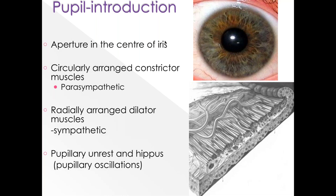Depending upon ambient light and the influence of sympathetic or parasympathetic nervous system, the pupil is forever changing. There is one condition called pupillary unrest or hippus, in which the pupil constantly changes even without any change in illumination or nervous system influence. The exact cause is unknown but it is considered a normal physiological condition. Unless very prominent, it does not cause significant problems and needs no further evaluation.